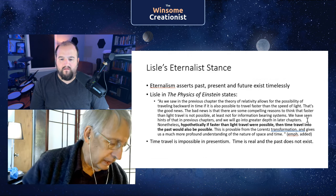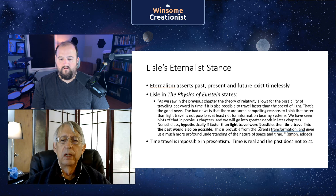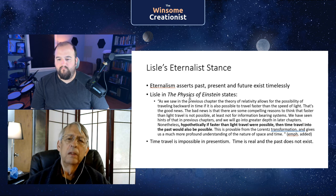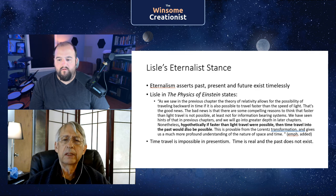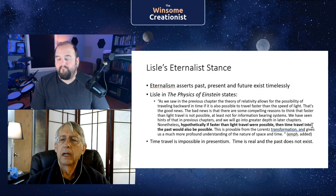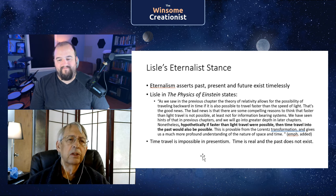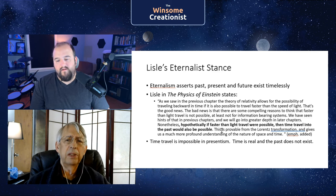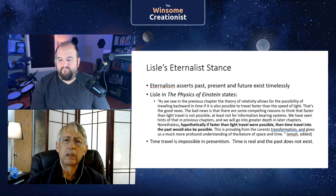Some people take issue with calling Lyle an eternalist — I think he just hasn't thought it through. But here's a direct quote from his book, which more ASC advocates should read. He says: 'hypothetically, if faster than light travel were possible, then time travel into the past would also be possible.' In presentism, time is real and the past does not exist. If you believe the past is a place you can travel to, then you're an eternalist. And time travel is impossible under presentism — this is Lyle himself implying an eternalist framework.